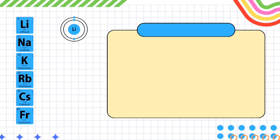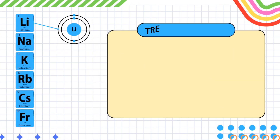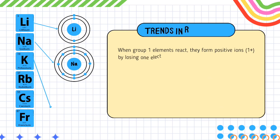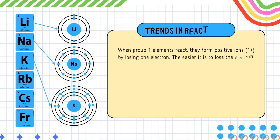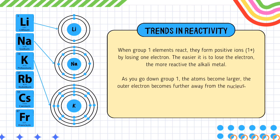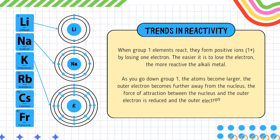Now we will learn about the trends in the reactivity of the alkali metals. When group 1 elements react, they form positive ions by losing one electron. The easier it is to lose the electron, the more reactive the alkali metal. As you go down group 1, the atoms become larger. The outer electron becomes farther away from the nucleus, so the force of attraction between the nucleus and the outer electron is reduced, and the outer electron is lost more easily.